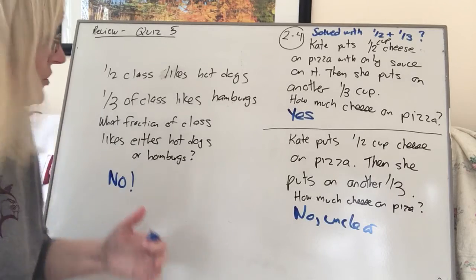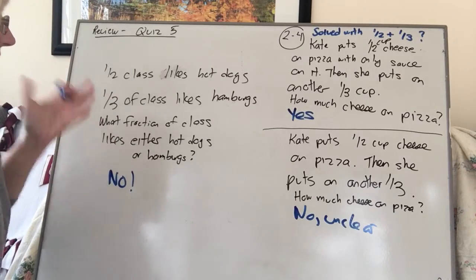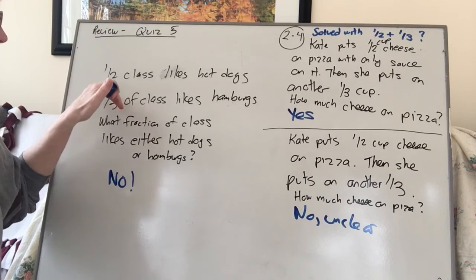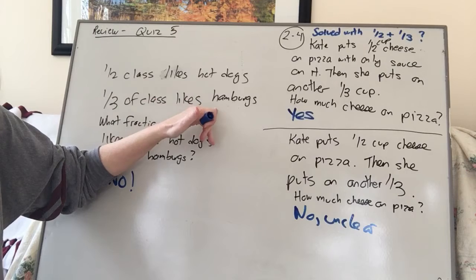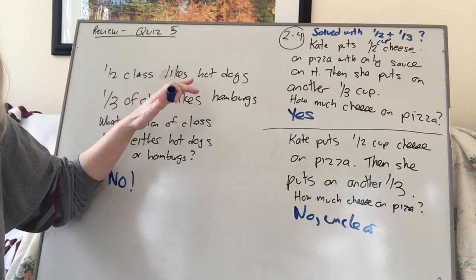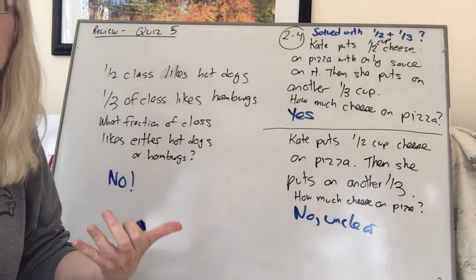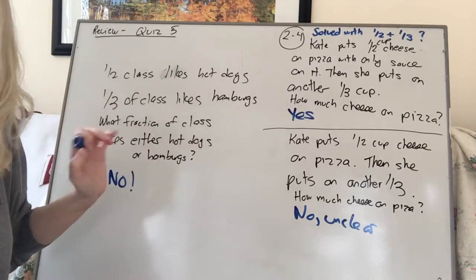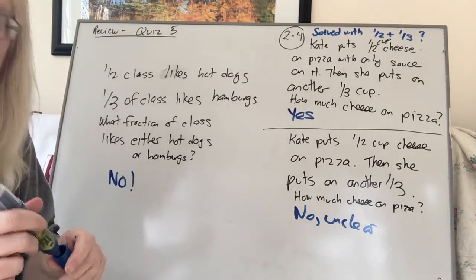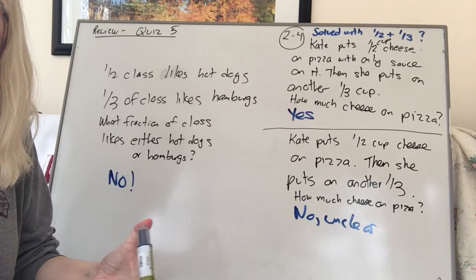Well, what if you had the situation where a kid liked both, right? One of the kids in the half fraction likes hamburgers, too. So that kid that likes hot dogs likes hamburgers, too. So you can't just go 1/2 plus 1/3 because some of the kids might be double counted. So you're not going to get an accurate representation of what fraction likes either one.